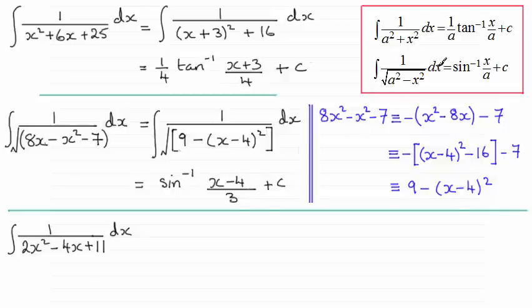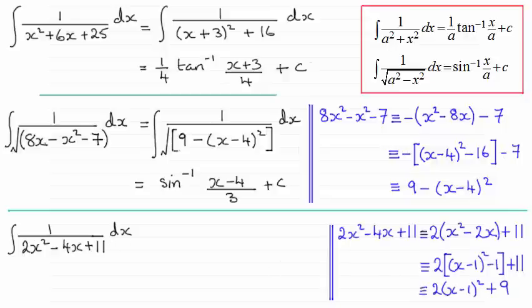So the last one here is a little harder than the first one up here because of this 2 here. But in the usual way what we do is we complete the square for the denominator.